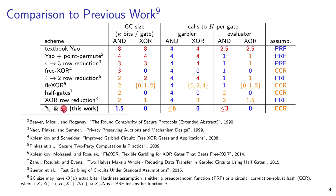This is a more detailed comparison to previous work. Communication and computational costs are given, along with the required security assumption. Our technique, sliced and diced garbling, is shown in bold in the bottom row. It gives the best communication cost among all schemes, although we do use more computation. How much more depends on an optimization detailed in the paper. Like all free XOR schemes, we require the stronger circular correlation robust hash assumption.